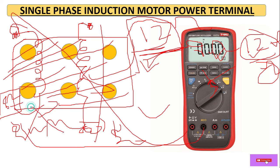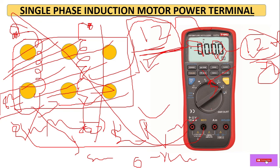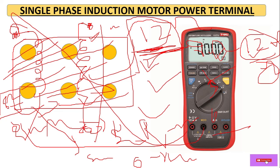The cross-sectional area of the running winding wire is larger — thick wire — because of its low resistance. Resistance is always inversely proportional to the cross-sectional area. The cross-sectional area of the starting winding is less, which is why its resistance is high. In this way we can understand the winding identification from a physics perspective.